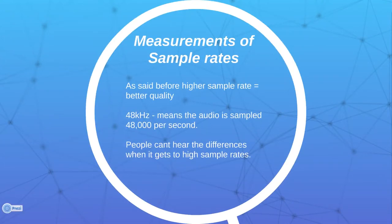Measurement of sample rates. As I said before, higher sample rate, better quality. 48KHz means the audio is sampled 48,000 records per second. It does it 48,000 samples per second. People can't hear the difference when it gets to high sample rates, so it doesn't really matter when it gets really high. But if it's like 1 per second, that's probably going to make a weird sound that we do not want. I'm probably going to do this in Adobe Premiere and set this audio to 32KHz. That will be 32,000 samples per second.